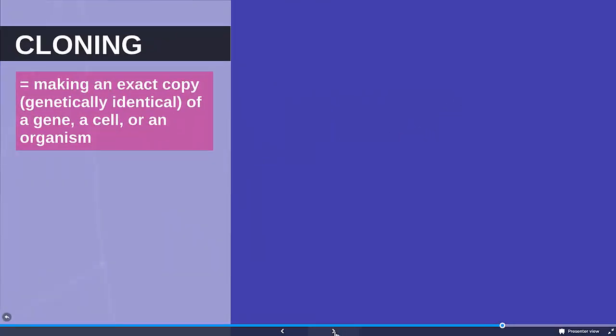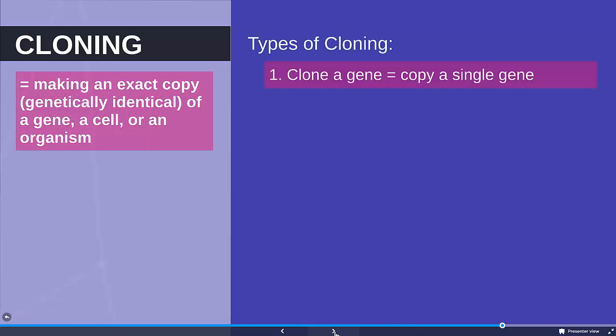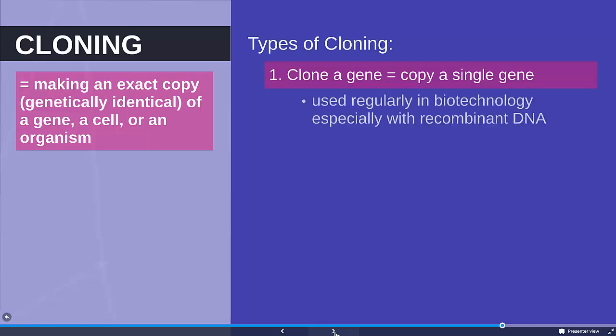Cloning is making an exact copy of something genetically identical, but it's important to note that cloning includes cloning of genes, cells, and organisms. Cloning a gene is when you just copy a single gene, and this is used regularly in biotechnology, especially with recombinant DNA.